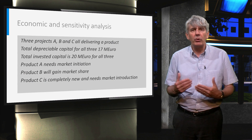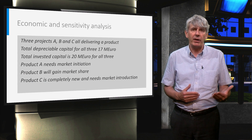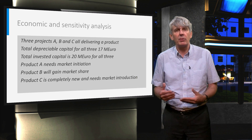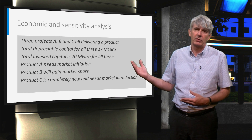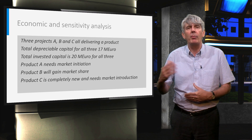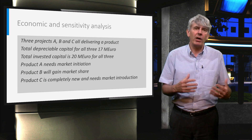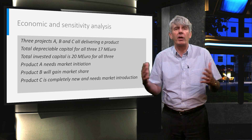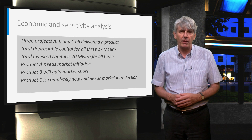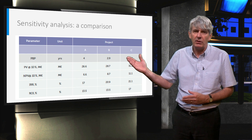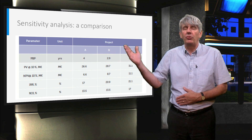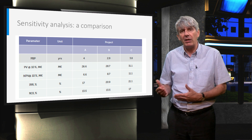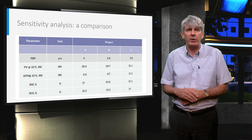As a final example, we will look at three comparable projects of which the decision makers have to select one. The three projects A, B, and C are similar in capital expenditure, as given in the slide. The difference in the three projects is how they go to the market: A needs market initiation, B is a growing market, and C is a completely new product requiring market introduction. A table summarizing the main indicators is shown here. The four main parameters — PBP, ROI, NPV, and IRR — represent the different aspects of the evaluation.